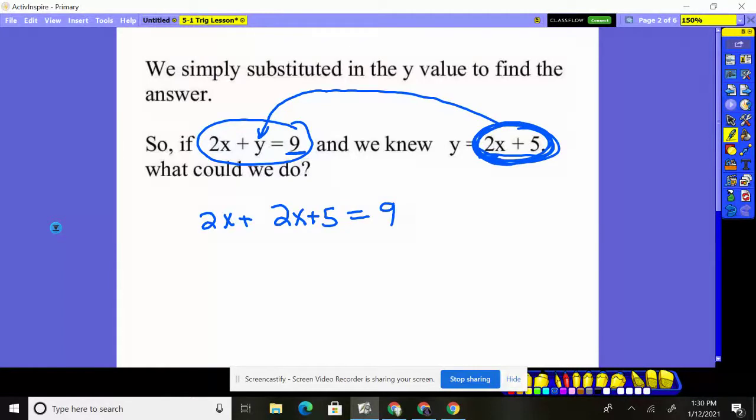Now this equation equals 9 according to what we have right there. So now I put my x's together, move my 5 over, and I find out 4x is equal to 4. 4 times what is equal to 4? Divide by 4, and we see x is 1. We simply use substitution.